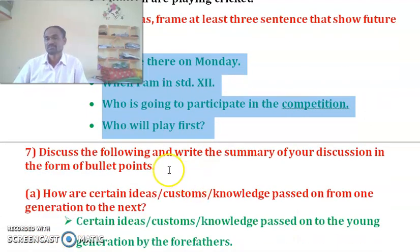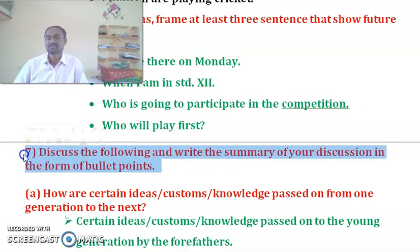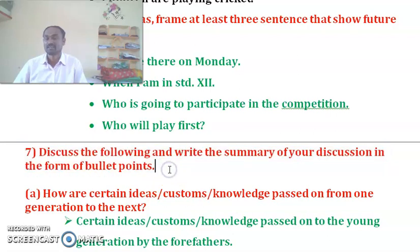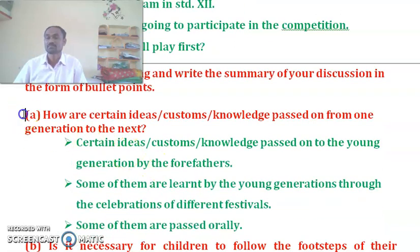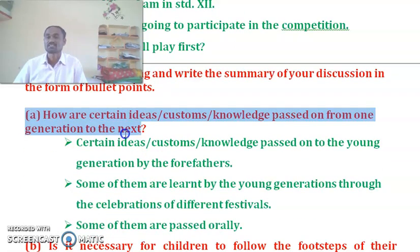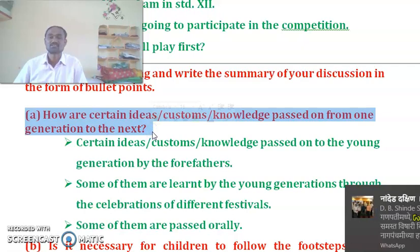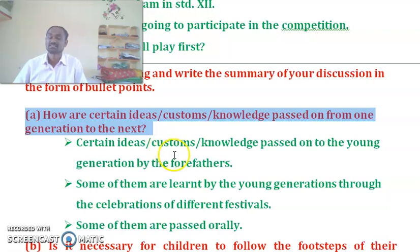Question number 7: Discuss the following and write the summary of your own discussion in the form of bullet points. The question is: How are certain ideas, customs, and knowledge passed from one generation to the next?